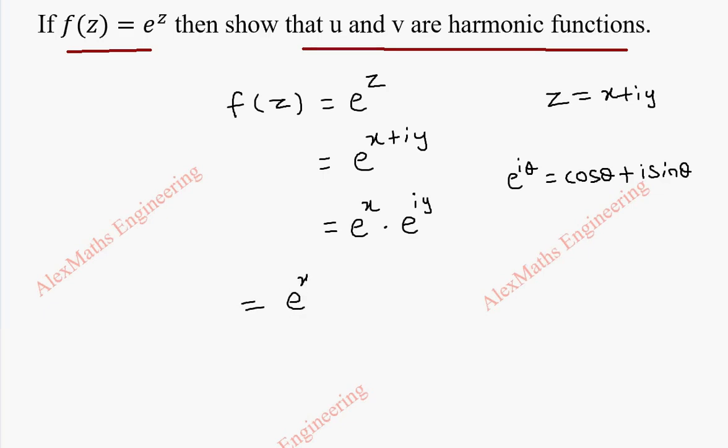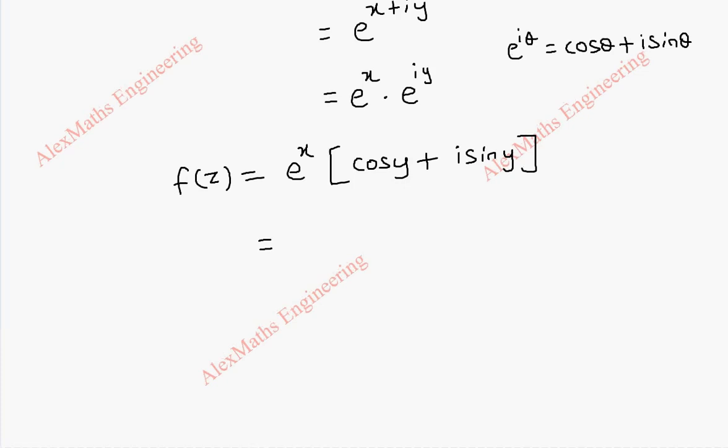So this becomes e^x times (cos y plus i sin y). So this is our f(z). Now we split into two parts: e^x cos y plus i times e^x sin y. So we get the real part u is e^x cos y, and v is the imaginary part e^x sin y.